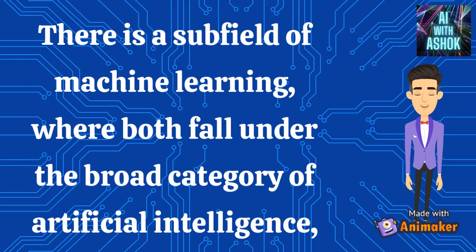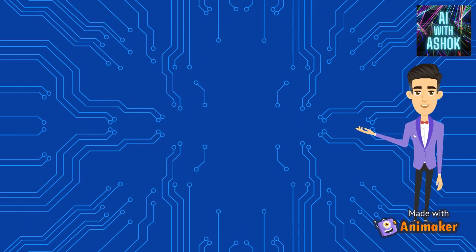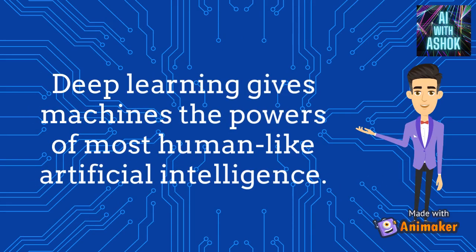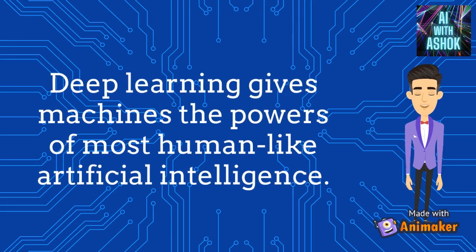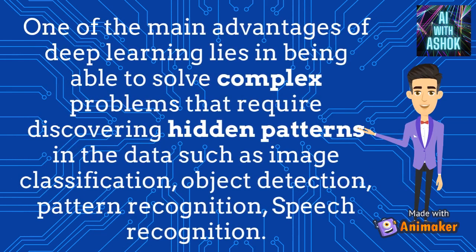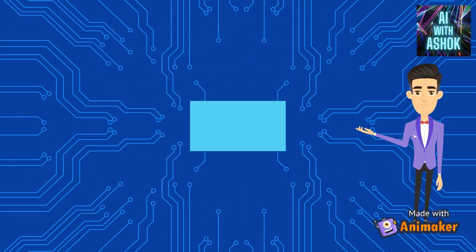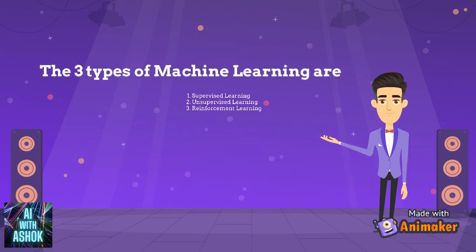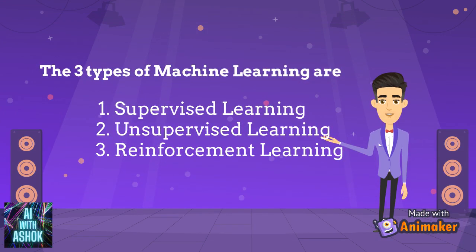There is a subfield of machine learning that falls under the broad category of artificial intelligence, which is deep learning. Deep learning gives machines the power of the most human-like artificial intelligence. One of its main advantages is being able to solve complex problems requiring hidden patterns in data, such as image classification, object detection, pattern recognition, and speech recognition.